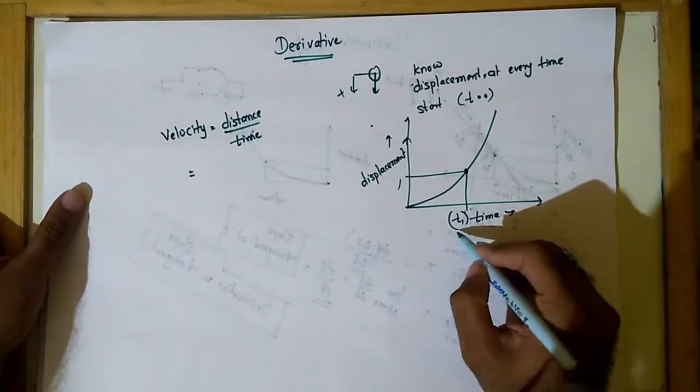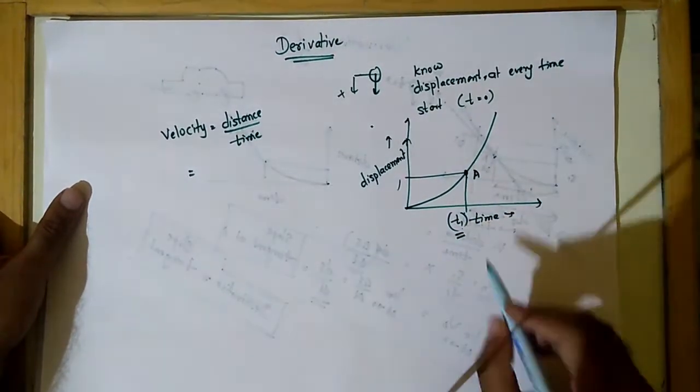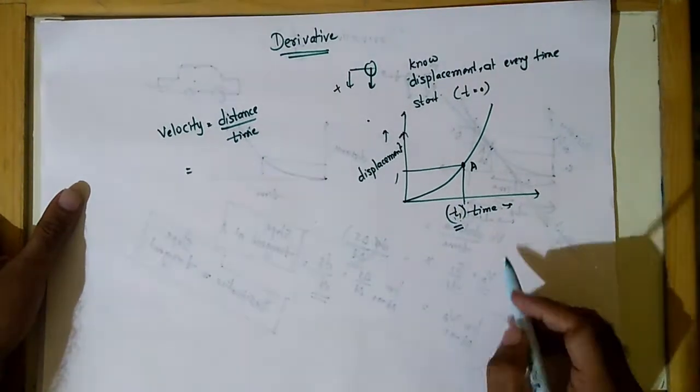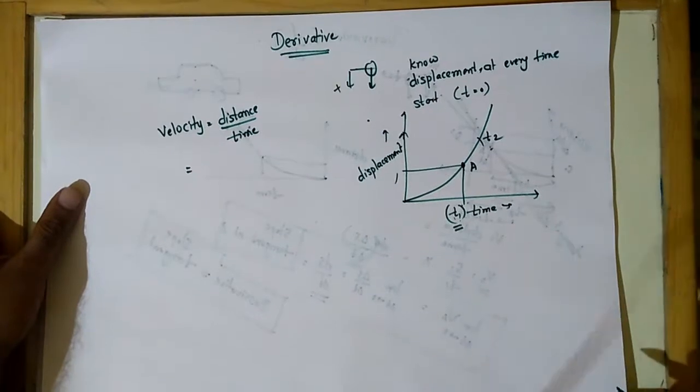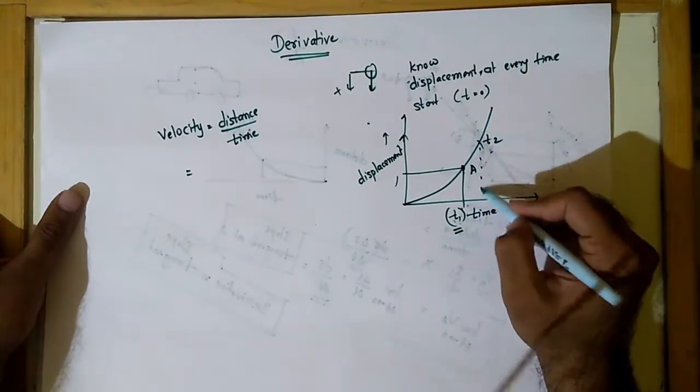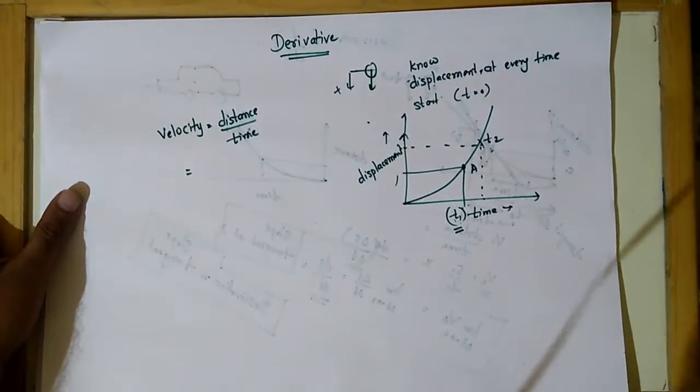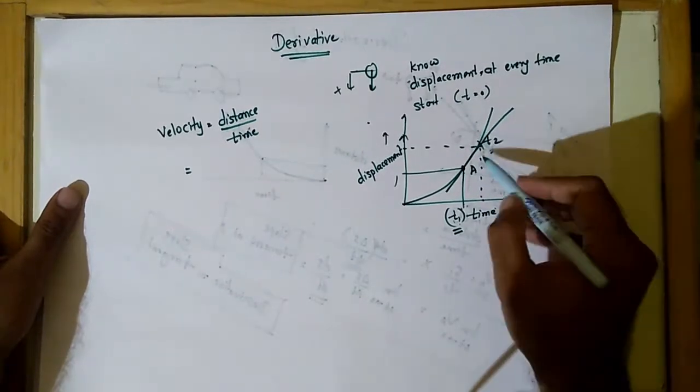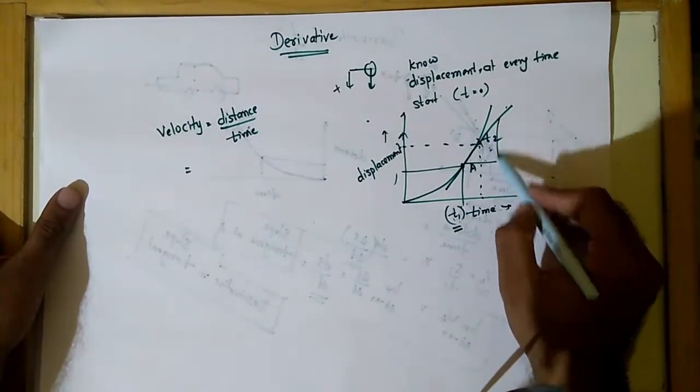What I will do is, suppose I want to calculate velocity at point A - this is point A - and at that time the time was given. I will take another point at time t2 and I will move on that curve, what is the displacement, and I draw a line. So the slope of the line...